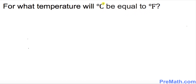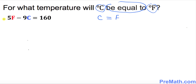Let's convert into algebraic form. C equals F. Using our formula and replacing C with F, this becomes 5F minus 9F equals 160.